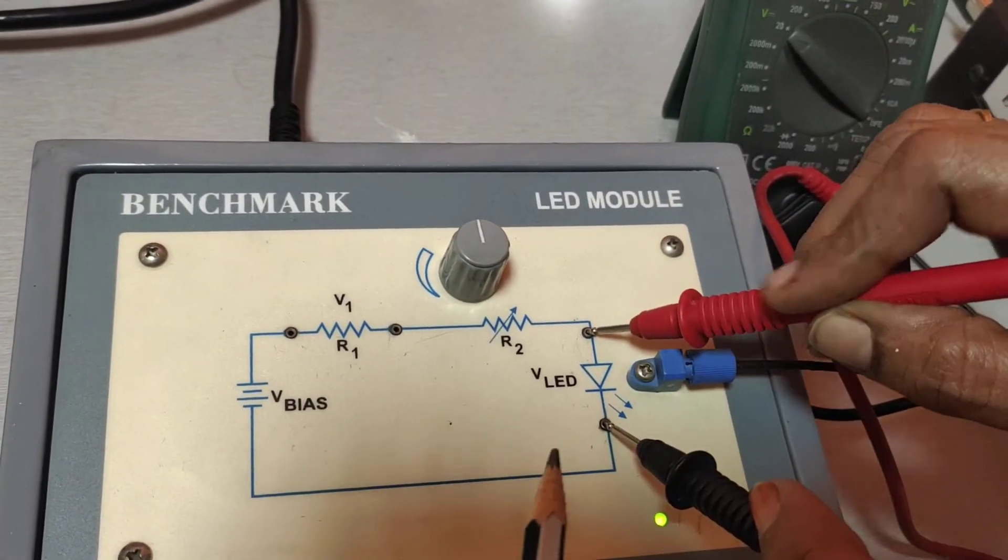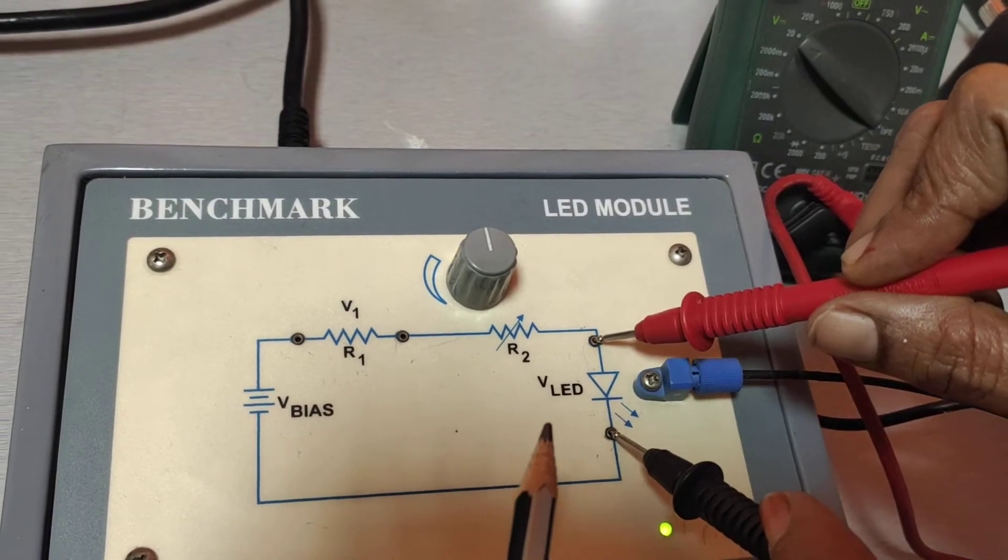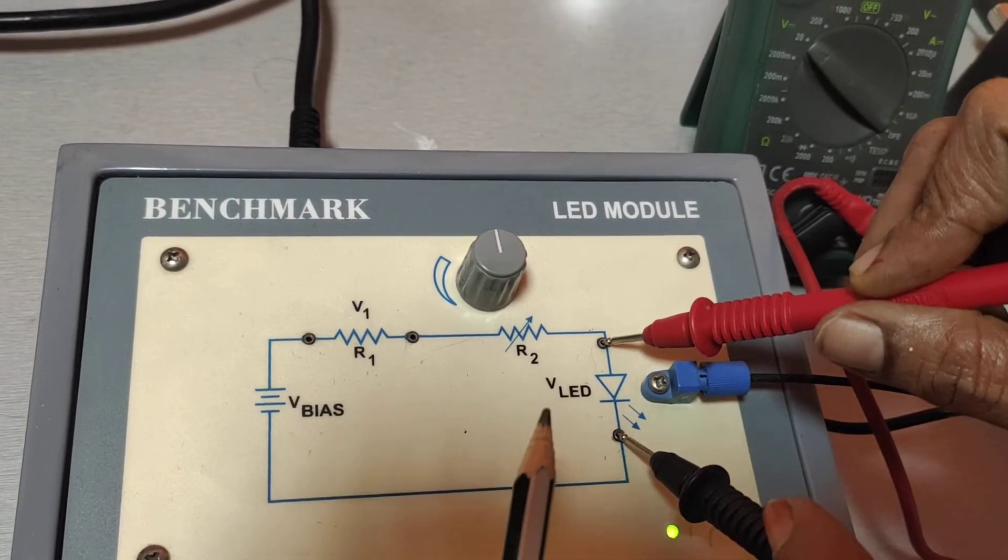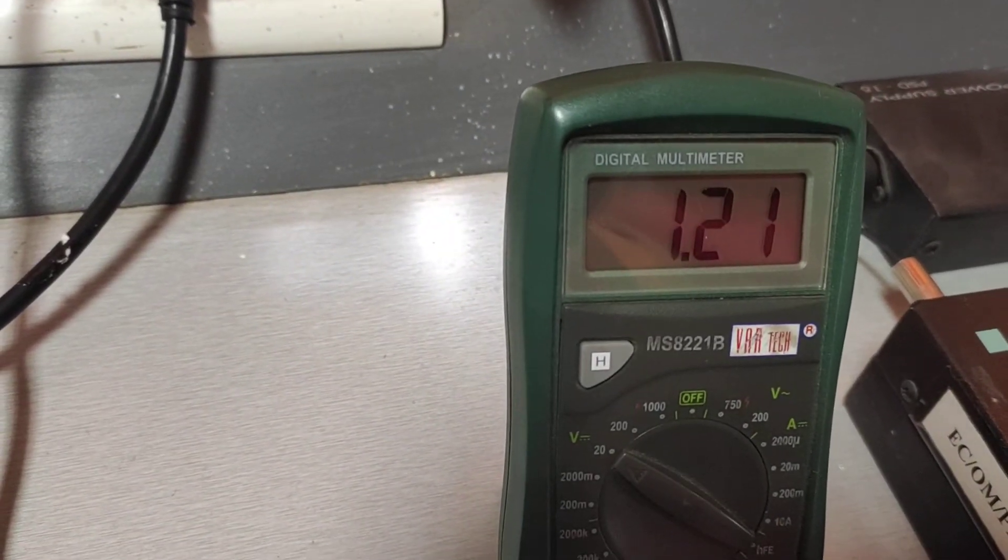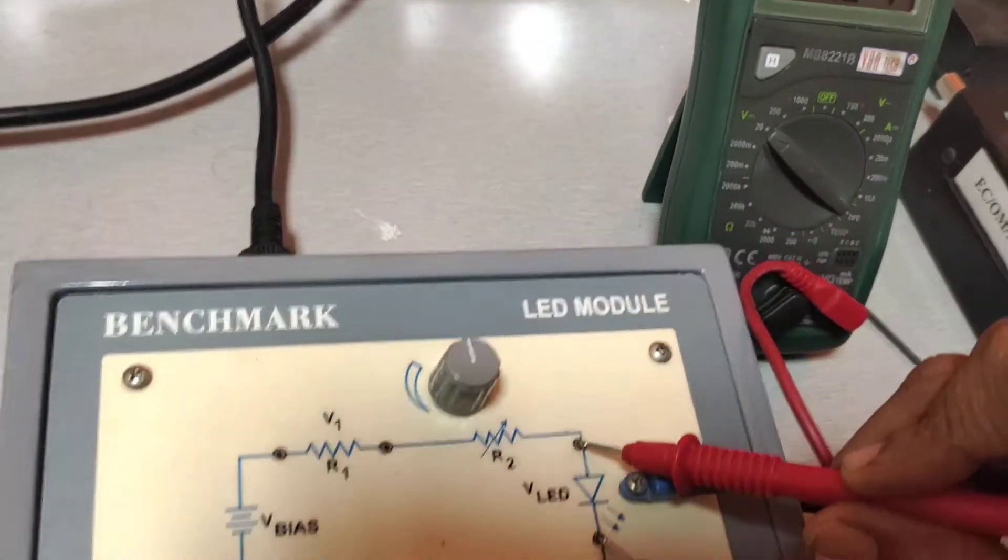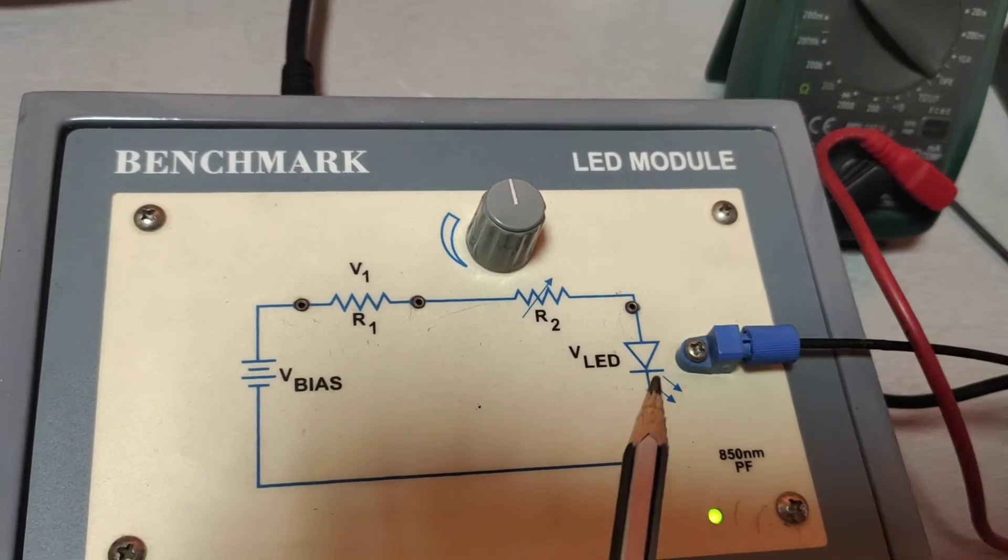Then correspondingly, we measure the voltage across the light emitting diode, VLED. It is 1.21 volts. This is the VLED.